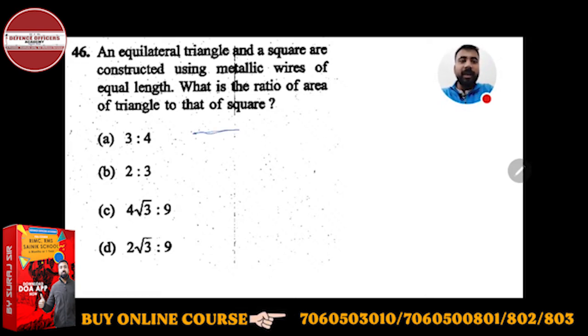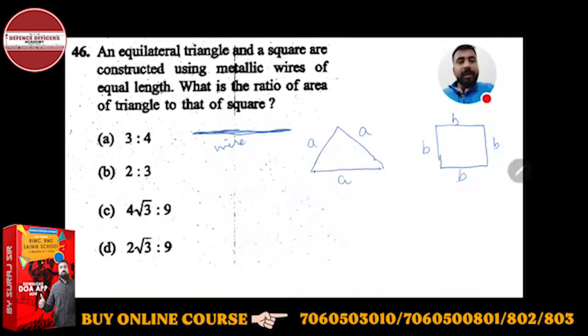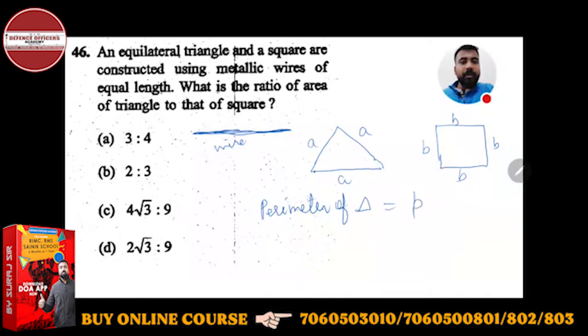Suppose a metallic wire is used to make an equilateral triangle, and this is a wire to make a square. Let a be the side of the equilateral triangle and b be the side of the square. This means both have the same perimeter, so the perimeter of triangle is equal to the perimeter of square.